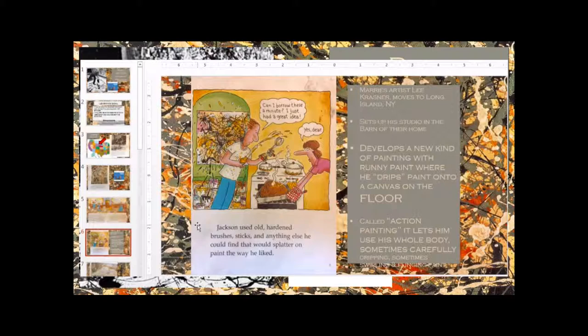Jackson used old hardened brushes, sticks, and anything else he could find that would splatter paint the way that he liked. Later on, he went on to marry another artist named Lee Krasner, and they moved to New York and set up a studio in the barn of their home.